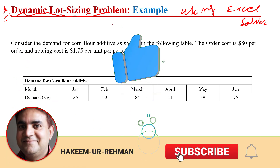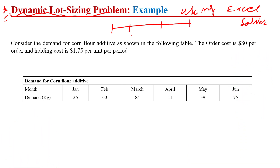Graphically, we can represent dynamic lot sizing over a finite planning horizon. If we have a four-month planning horizon, we have time periods t=1, 2, 3, and 4. In every time period we have a demand. The dynamic lot sizing problem says we must meet this demand based on available inventory plus the quantity produced or ordered in that period. At the end of each period we may have leftover inventory, against which we bear a holding cost, and if ordering, an order cost.